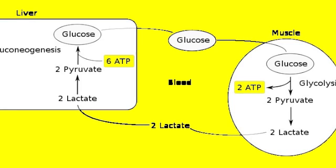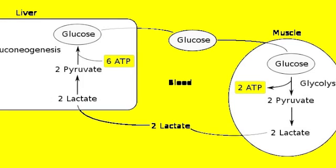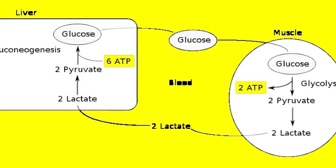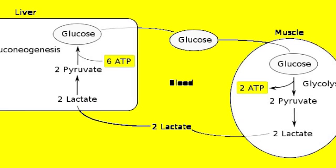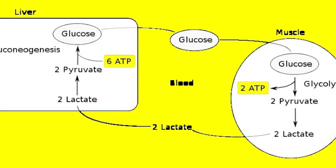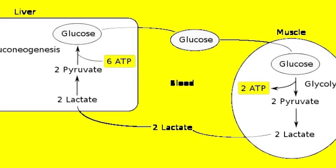This is convenient for the body because the liver has a lot of energy stored within itself as lipids or glucose in the form of glycogen, which is a macromolecule of glucose. So this is useful when you need a lot of energy but don't have enough oxygen for the normal breakdown of glucose in the muscles.